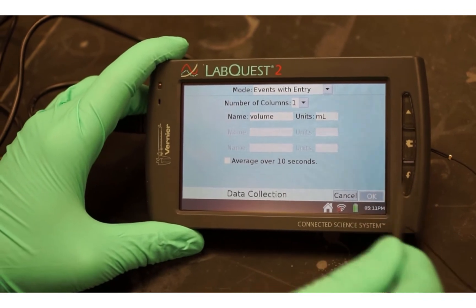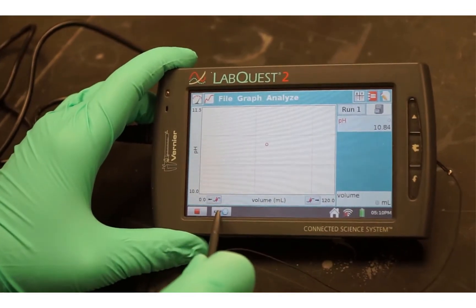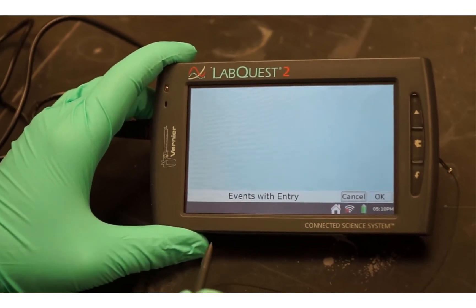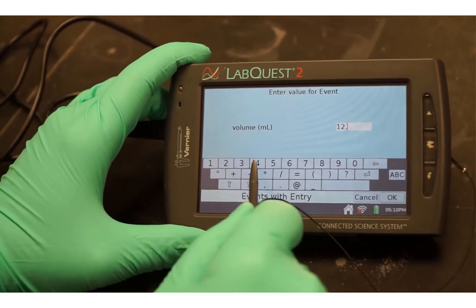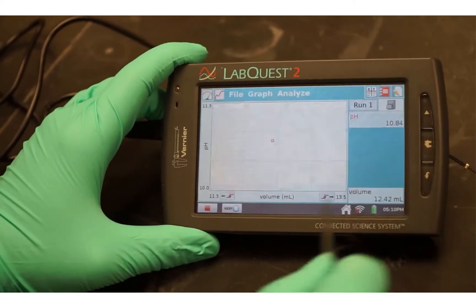Click the green Start arrow to start data collection. Before you add any HCl, tap Keep. Then read the burette and enter the exact burette reading in milliliters. Then select OK to store this data pair.